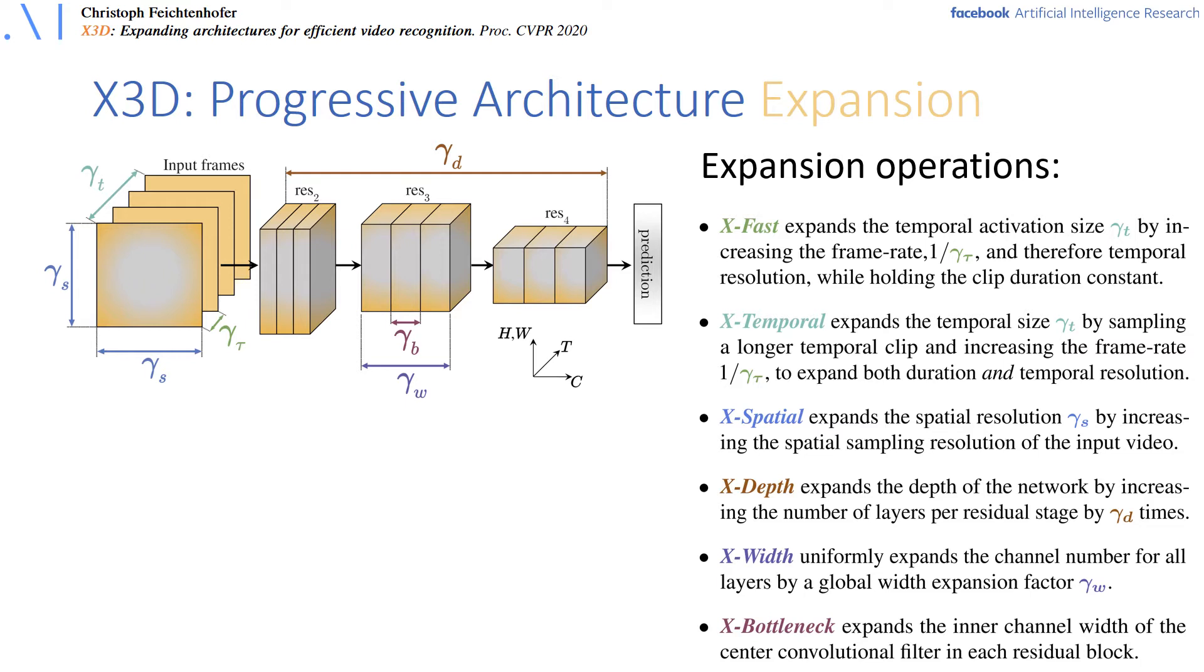The candidate axes are frame rate, temporal duration, spatial resolution, the depth of the network, the width of the network and the bottleneck width of the model.